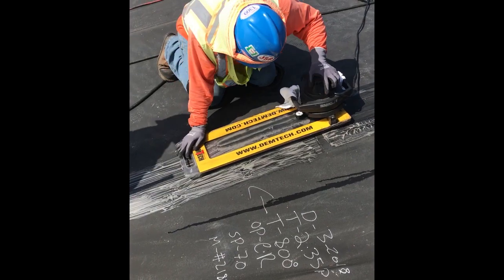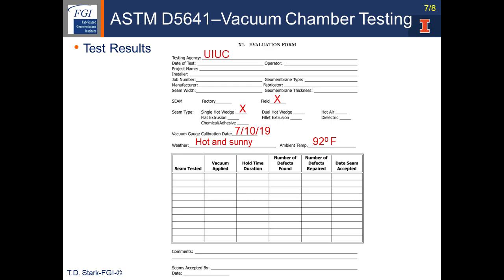The other technician is applying soap and water to the seam in front of the vacuum chamber. This is the table for recording the results of the vacuum chamber test in the field. The two important pieces of information to include is whether the seam is being tested in the factory or the field — in this example it is field — and also what type of seam. In this particular example I have a single hot wedge weld seam.